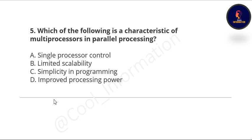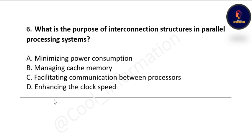Next question: which of the following is a characteristic of a multiprocessor in parallel processing? Options are: single processor control, limited scalability, simplicity in programming, and improved processing power. The correct option is improved processing power.